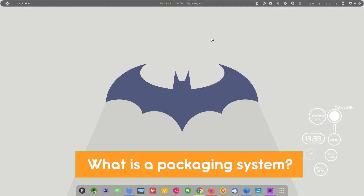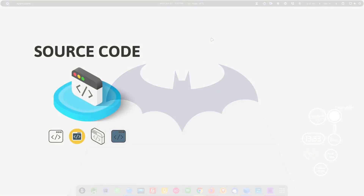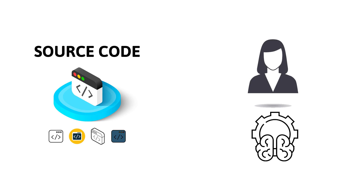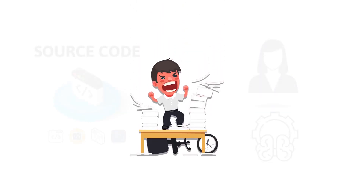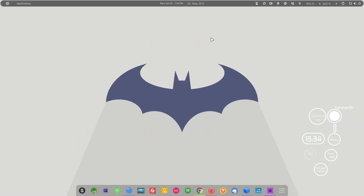Before going to snap, let's first understand what a packaging system is. Earlier, when Linux was new and there was not much momentum in the computer industry, people used to install applications from source files. Developers would provide the source files and users had to compile all the files themselves and manage all the dependencies. That was very tedious work and people used to run into a lot of problems.